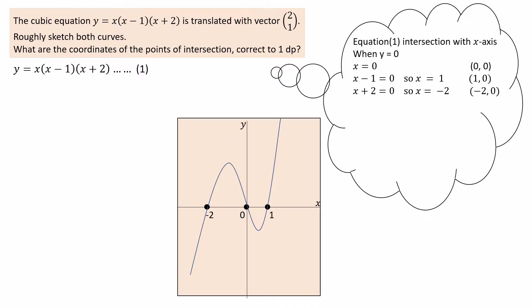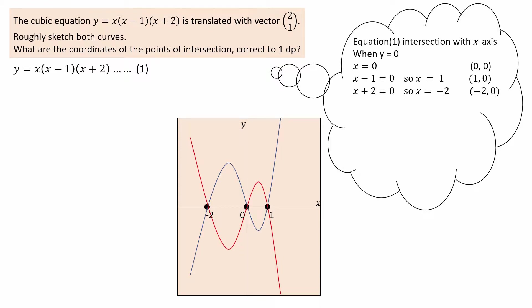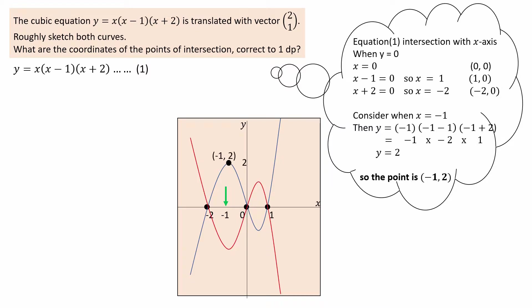Joining the points can give this cubic or this cubic. To determine which cubic, consider a point on the curve when x equals negative 1. Substituting x equal to negative 1 into equation 1 gives negative 1 times negative 2 times 1, which equals positive 2, and the point (−1, 2), indicating this curve.